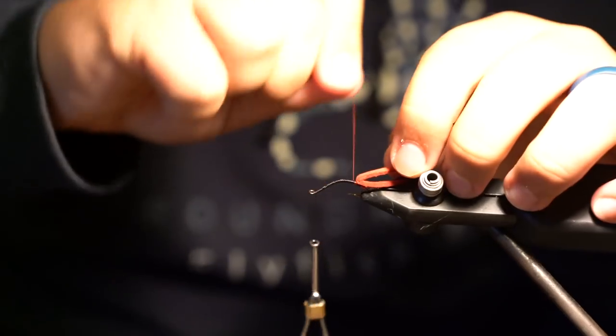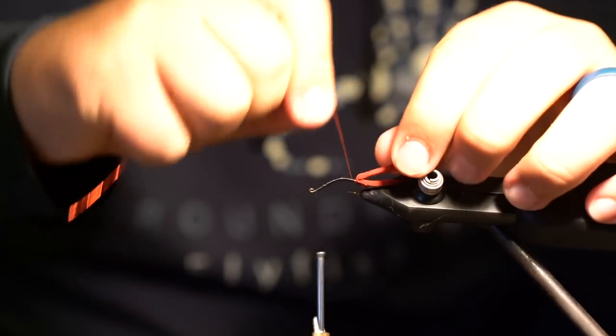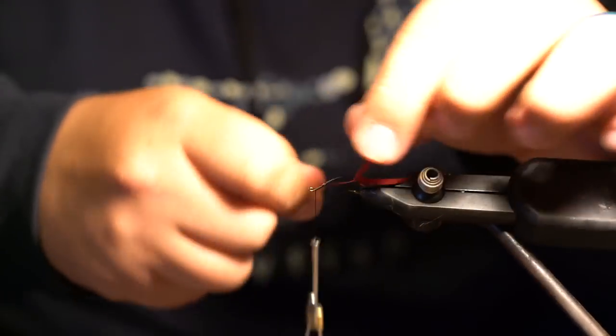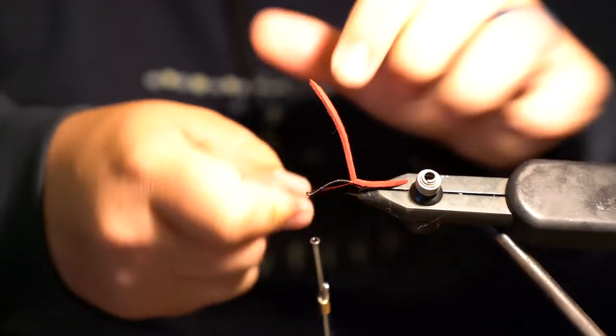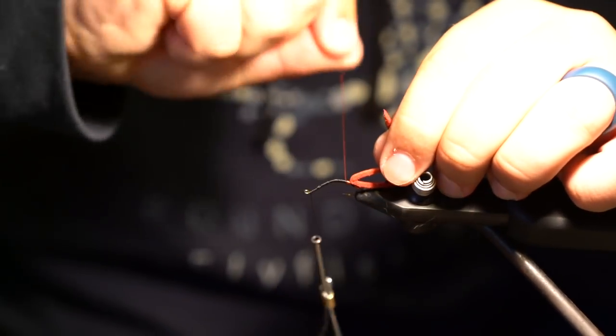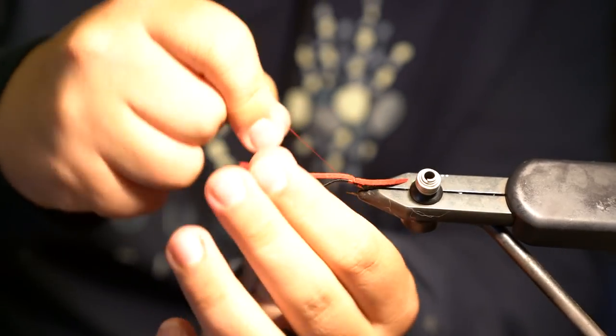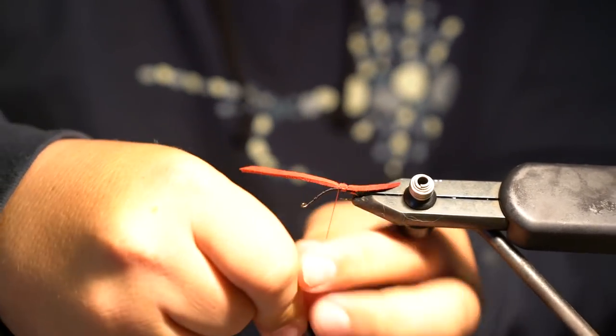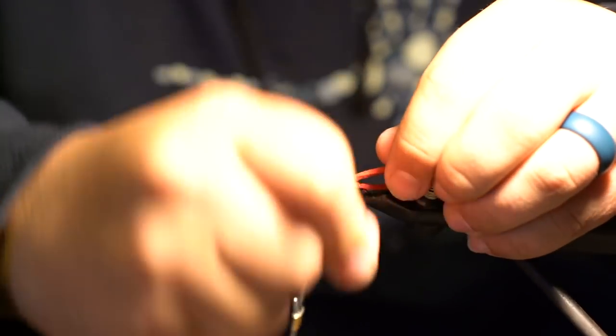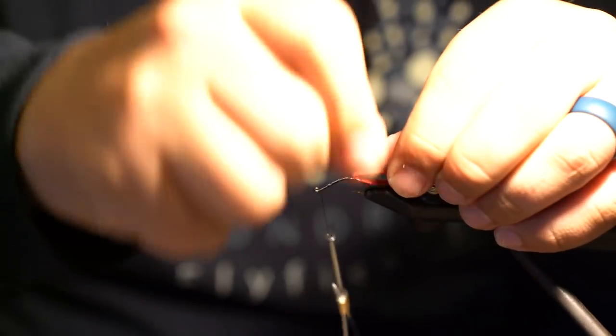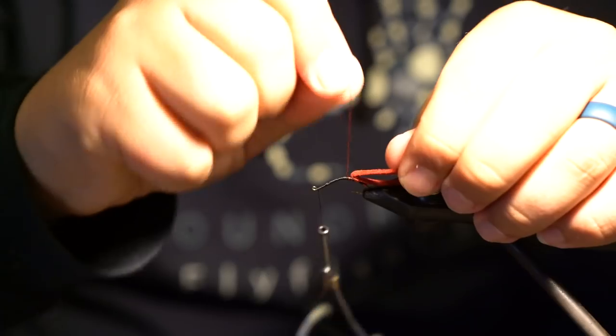So be nice and tight like that. And I'll continue my wraps forward. And like I said I like to do about four or five wraps in between each tie down point on the worm itself. So get that. And I'll fold this over again. Nice tight wrap. And I'm really pulling on that because I don't want any issues with this thing coming out or coming undone.